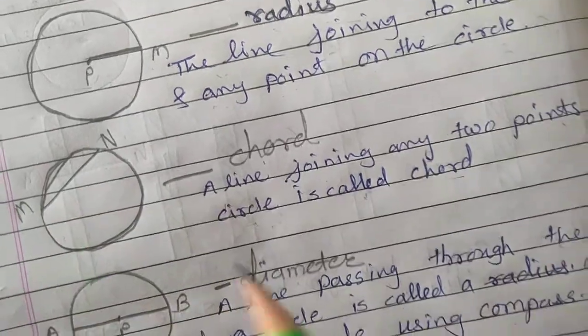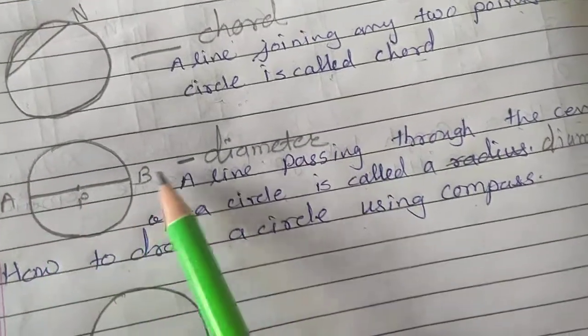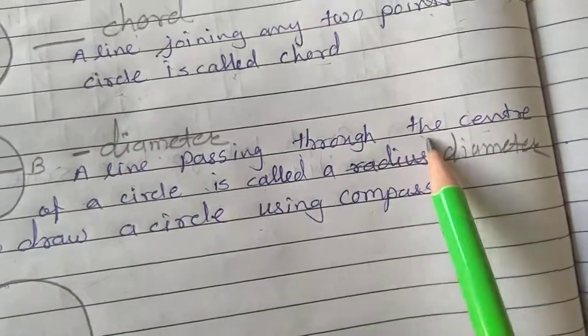Here, diameter. AB is the diameter. A line passing through the center of a circle is a diameter.